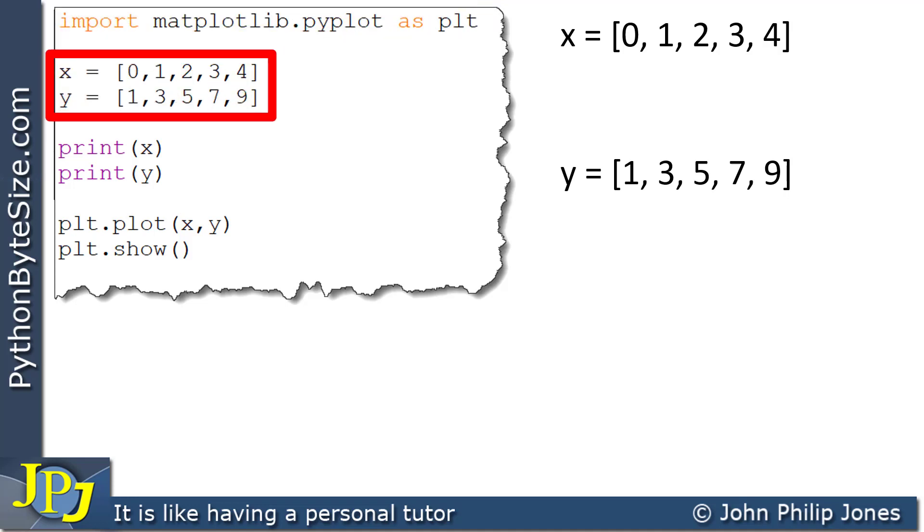And if we look at these here, the x and the y, which I took the values from the table, you can see in my code, I've put x equals the list 0, 1, 2, 3, 4 and y is the list 1, 3, 5, 7 and 9.